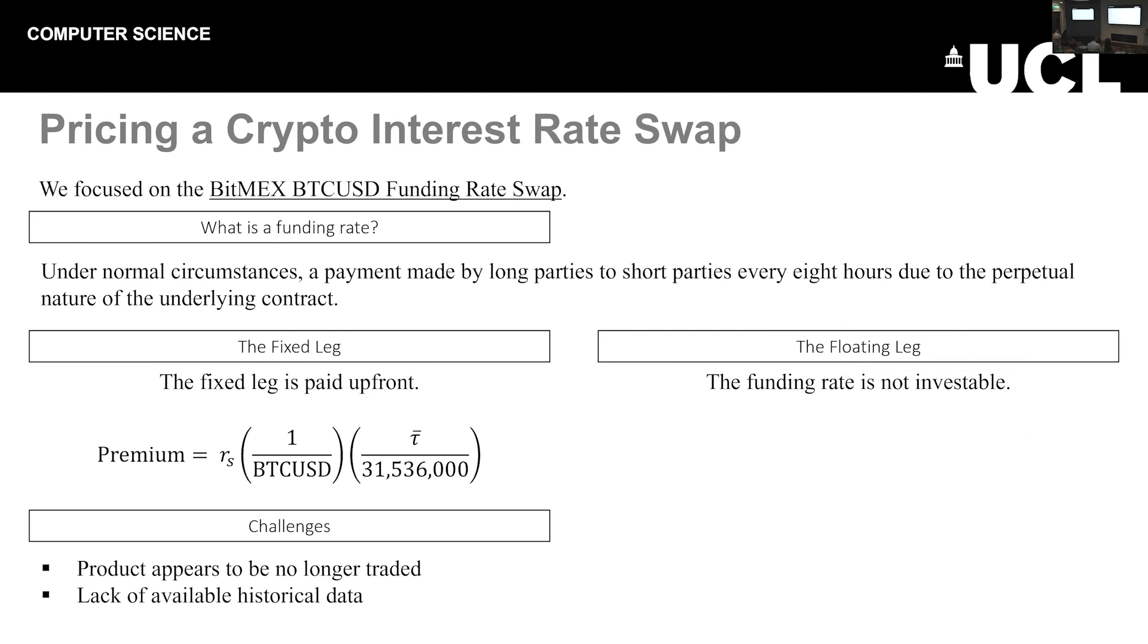But let's move on and consider the crypto space. Now, we chose to look at one specific example, the Bitcoin-US dollar funding rate swap. In the world of crypto, we've moved away from interest rates, and we're now considering the floating leg as the funding rate. Now, the funding rate comes about because of the perpetual nature of the underlying contract, which means that every eight hours, the contract can be seen as being rolled over, and a payment or a fee must be made. Now, under normal circumstances, that's simply a payment from the long party to the short party, assuming, of course, you hold an open position over this time.